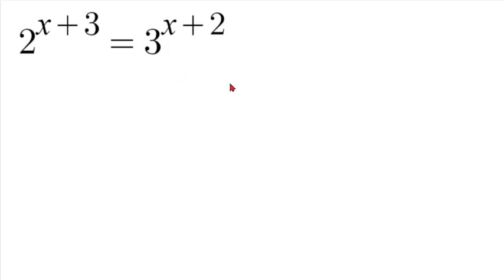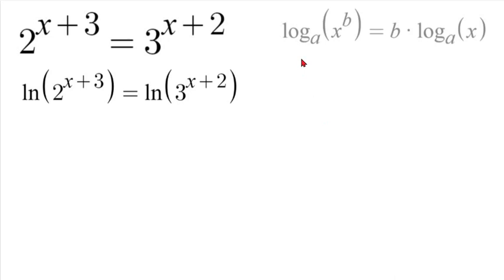So the first thing we're going to do with this one is we're going to take the natural log of both sides so that we can solve for the exponent. So it'll look like this, natural log of both sides, and then using our logarithm properties we can move that exponent out to the front.